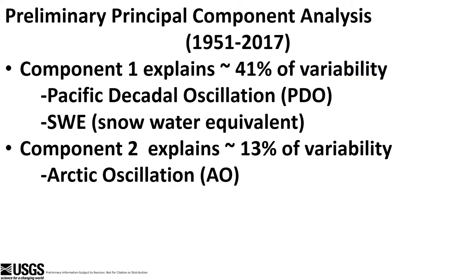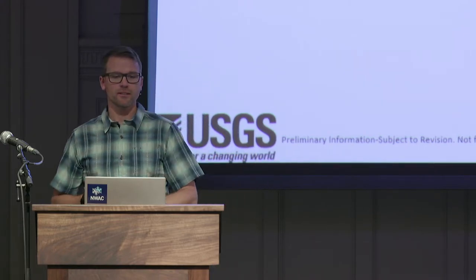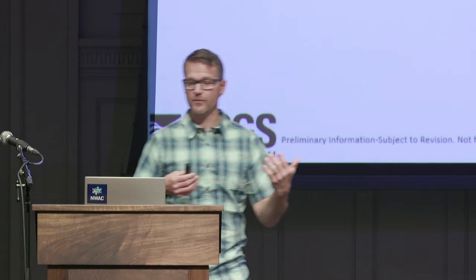We went through a few statistical techniques. For those familiar with principal component analysis, we looked at a variety of atmospheric and climate variables: snow water equivalent, snow depth, El Niño and La Niña, and the Pacific Decadal Oscillation, which is a longer-term scale similar to El Niño looking at sea surface temperatures across the Pacific. What we found is that PDO and snow water equivalent explain over 40% of the variability in these large magnitude avalanche years.